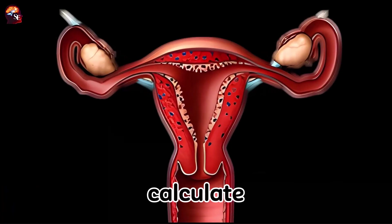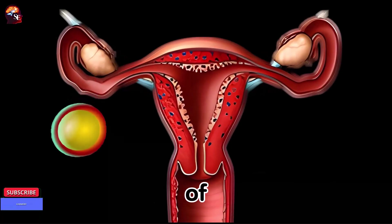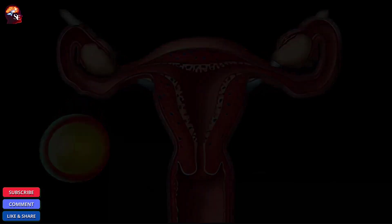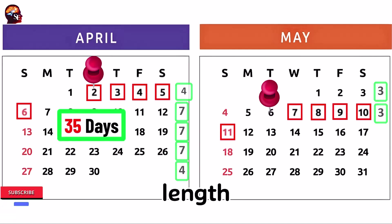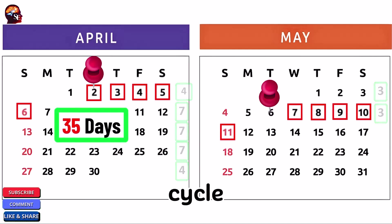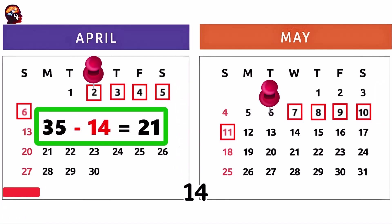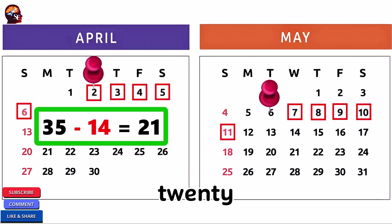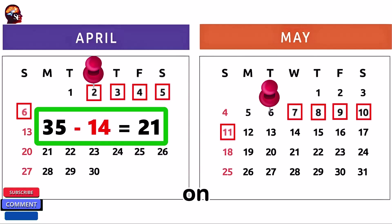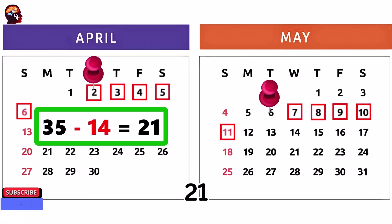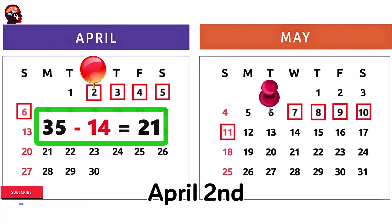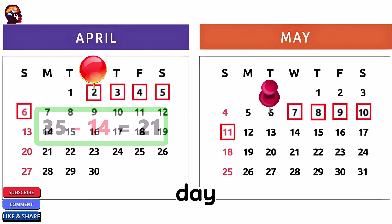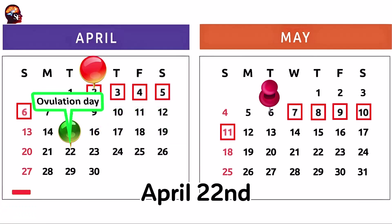The next step is to calculate the day of ovulation. We subtract 14 days from the length of the menstrual cycle: 35 minus 14 equals 21. Therefore, ovulation occurs on the 21st day of the cycle. Counting 21 days from April 2nd, the day of ovulation is April 22nd.